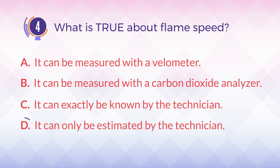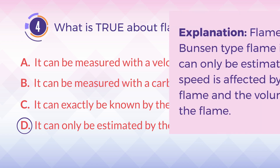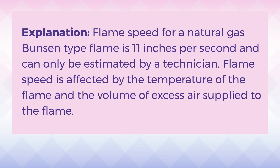The answer is D: it can only be estimated by the technician. Flame speed for a natural gas Bunsen-type flame is 11 inches per second and can only be estimated by a technician. Flame speed is affected by the temperature of the flame and the volume of excess air supplied to the flame.